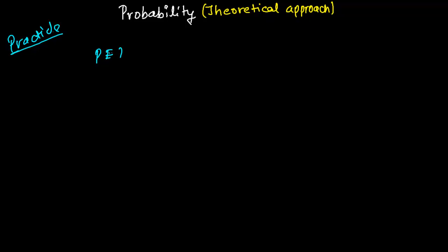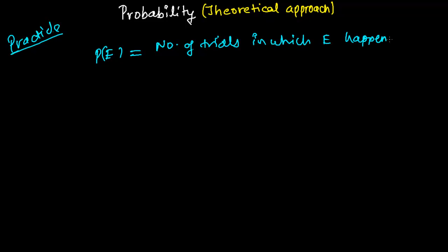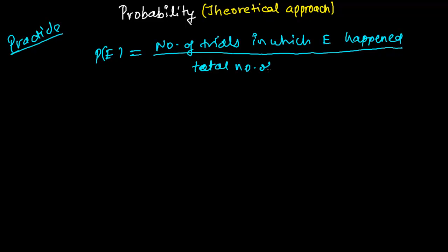We defined it something like this: the probability of event E equals the number of trials in which event E happened divided by the total number of trials. Like this, we found out the probability in previous videos. Now we are going to learn probability in the theoretical approach, which is not much different from this practical way.